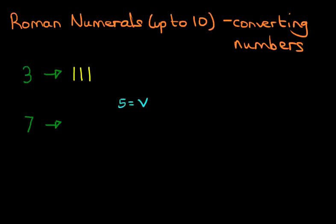So 5 is V. So in this scenario what we have to do is we do V first, that's 5, and then 2 capital I's: 5, 6, 7. So in effect we can actually write this down here. We've got 5, 6, 7.